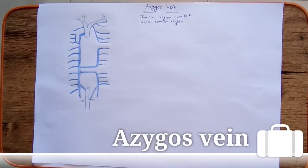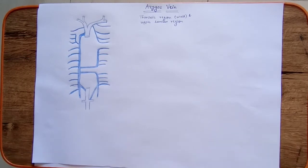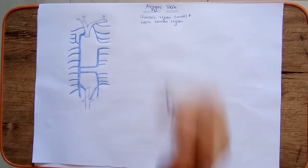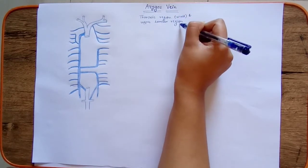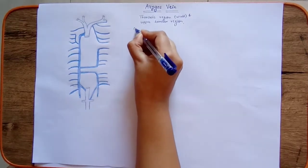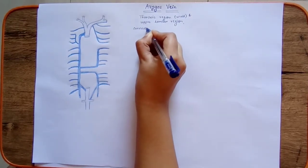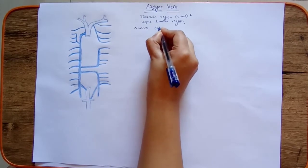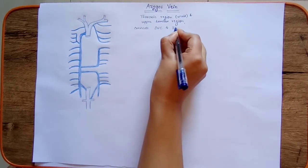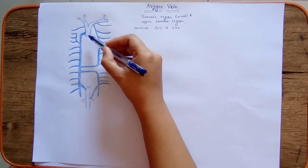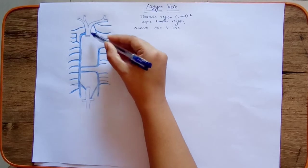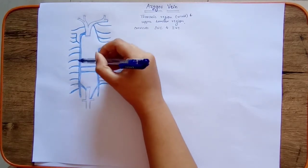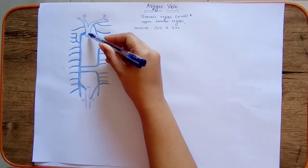In this video we will discuss the azygous vein. Azygous means unpaired or single. The azygous vein drains the thoracic region, thoracic wall, and upper lumbar region. It also connects the superior vena cava and inferior vena cava. As seen in the diagram, this is the superior vena cava, this is the inferior vena cava, and this is the azygous vein, which forms an important connecting channel between these two major veins.